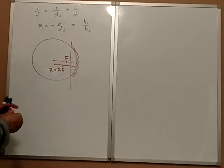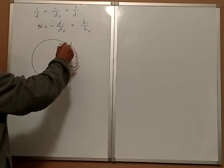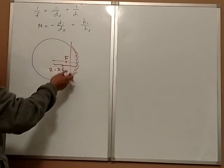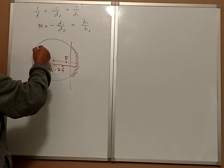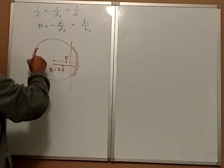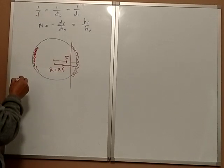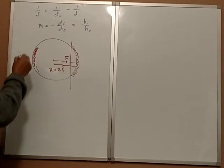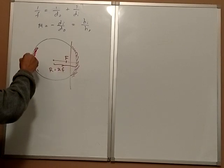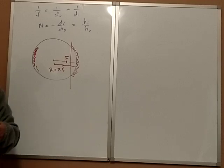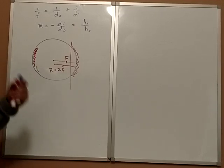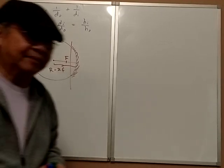If instead of coating on the inside, we coat it on the outside — like mercury coating on the outside — then the reflecting surface will be on the other side and it'll be a convex mirror. So that's the only difference. The formulas are the same.